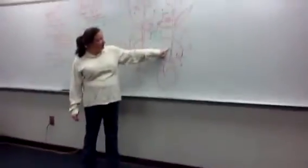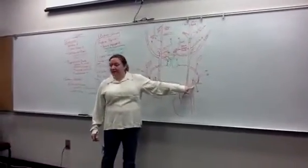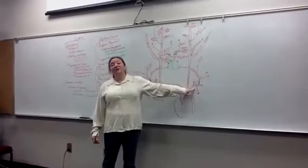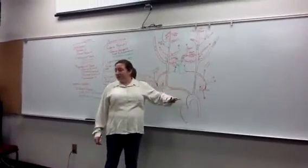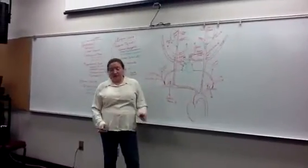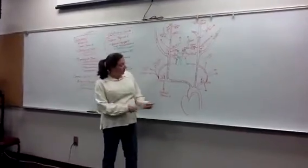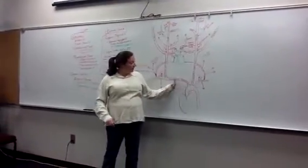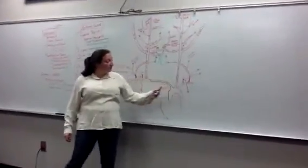Arteries of the neck. We start down here where we come off the arch of the aorta. From last quarter, we remember the brachiocephalic trunk, left common carotid, and left subclavian off the arch of the aorta. Then we're going to go over the branches that come off of the subclavian.